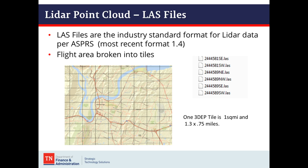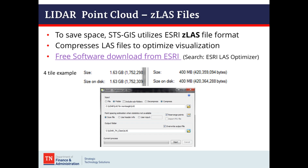The point cloud is delivered in a .LAS format and is broken into tiles. One 3DEP tile is one square mile, as seen in the example above Chattanooga. To save space, STS GIS utilizes an ESRI ZLAS format, so if you download the data from us you will get a .ZLAS file. As you can see in the four-tile example, we go from 1.63 gigs down to 400 megabytes, so this saves a lot of space. If you need the data in .LAS format, you'll need to download the ESRI LAS Optimizer — a free software — to uncompress it. You input your ZLAS files and output to a .LAS.